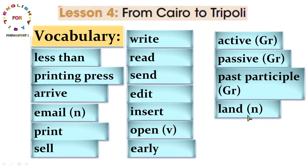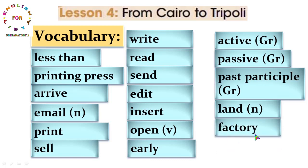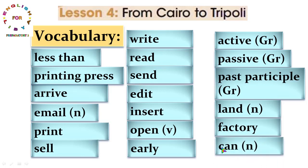Land as a noun بمعنى الأرض أو اليابسة. Factory بمعنى مصنع. Can as a noun - كنا نعرفه بمعنى يستطيع ولكن هنا كاسم كلمة can معناها علبة. هذه الكلمات الجديدة للدرس.